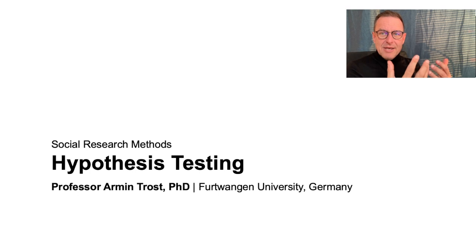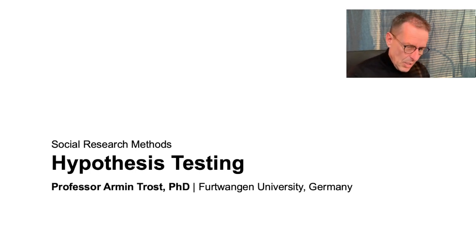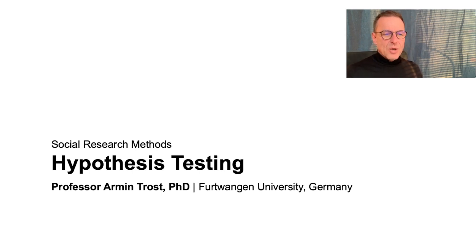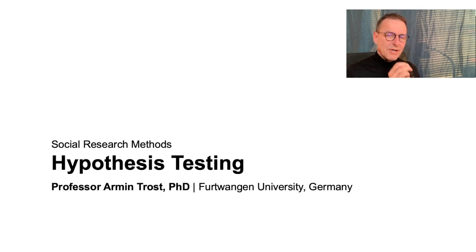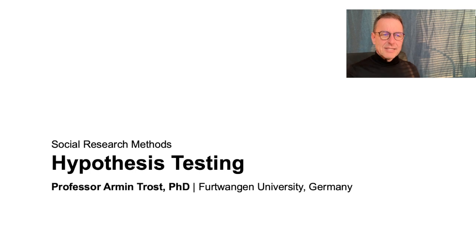A hypothesis is a proposition about the truth. What we differentiate in social science is null hypotheses and alternative hypotheses. What is a null hypothesis? For instance, if I say there is a difference in agreeableness between men and women, the null hypothesis would say no — there is no difference, even if you find one. The null hypothesis very often sounds like: there is no difference between the independent variable. There is nothing — nil. That's the null hypothesis.